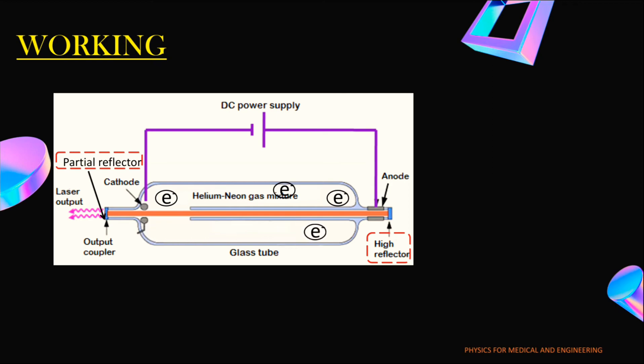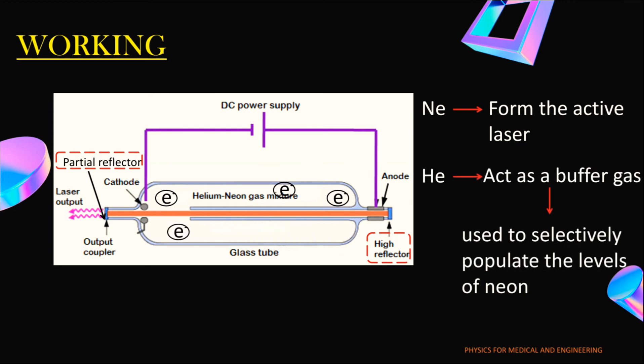In this laser, the neon atoms form the active laser material while the helium atoms act as a buffer gas and are used to selectively populate the levels of neon.